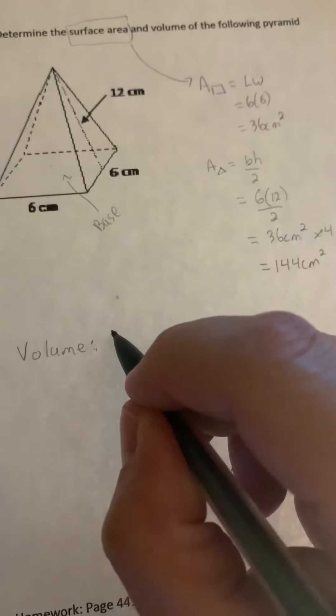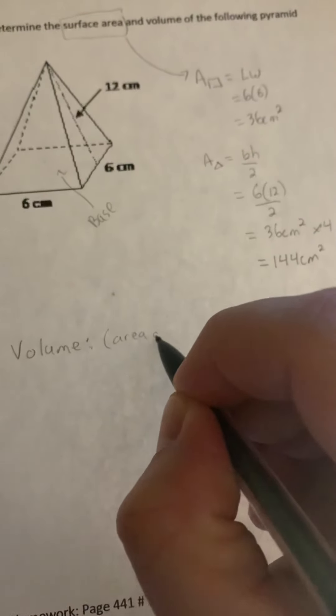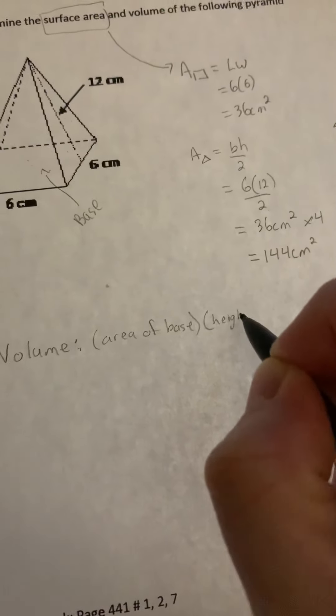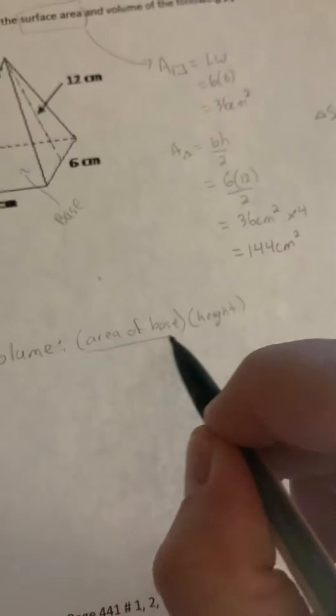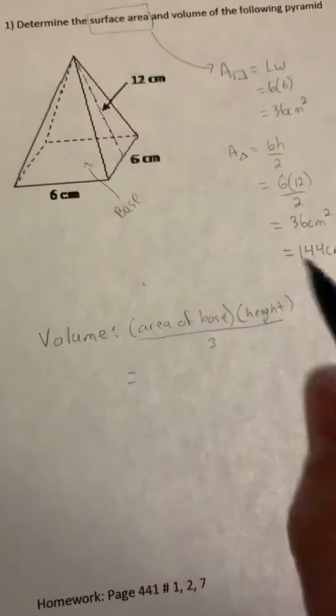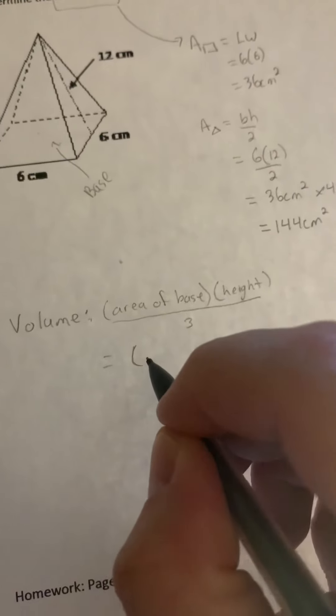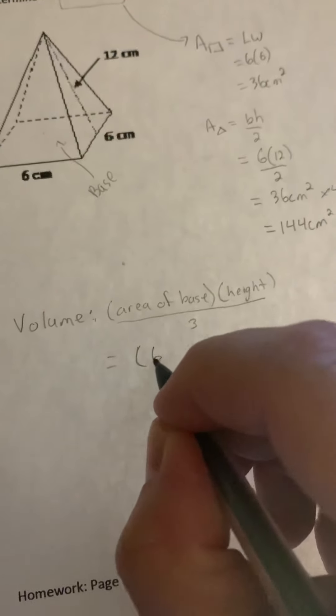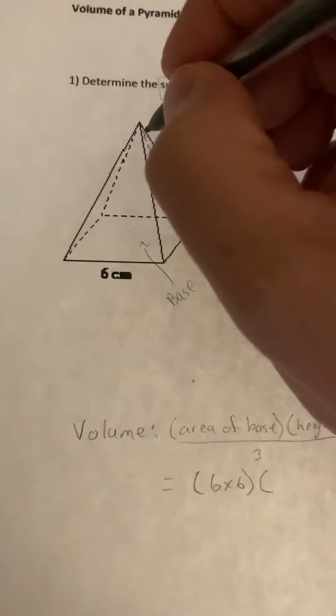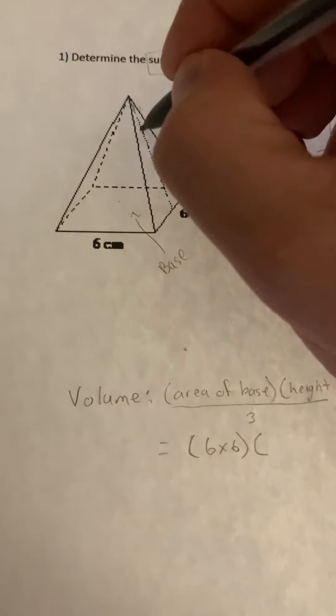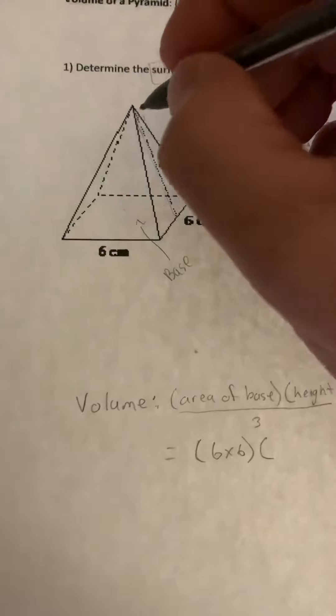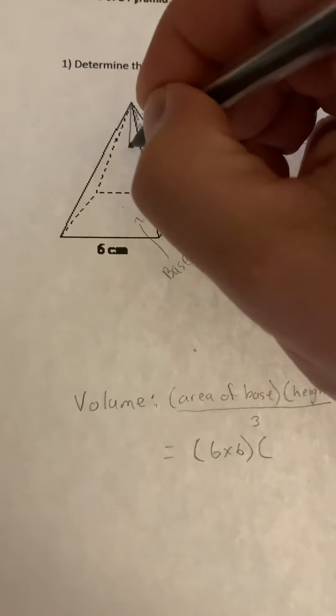So we're doing the area of the base times the height divided by 3. Okay so we said the area of the base is finding the area of the square. So it's length times width, which is 6 times 6. And now we want to find the height of the pyramid. So be careful with this. This here is not the height. That's the height of the triangle. That's not the height of the pyramid.